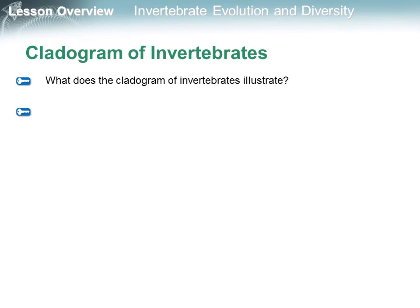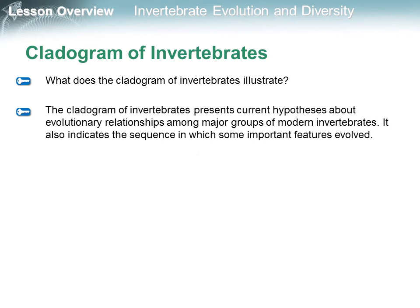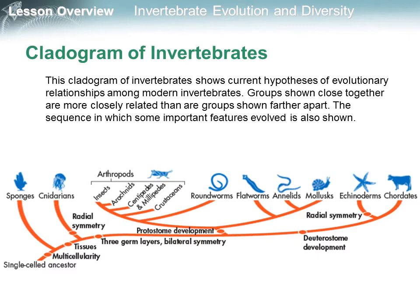The Cladogram of Invertebrates — what does it illustrate? The Cladogram of Invertebrates presents current hypotheses about evolutionary relationships among major groups of modern invertebrates. It also indicates the sequence in which some important features evolved. Groups shown close together are more closely related than are groups shown far apart.